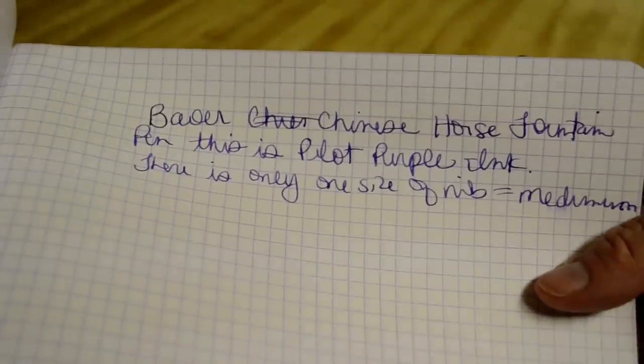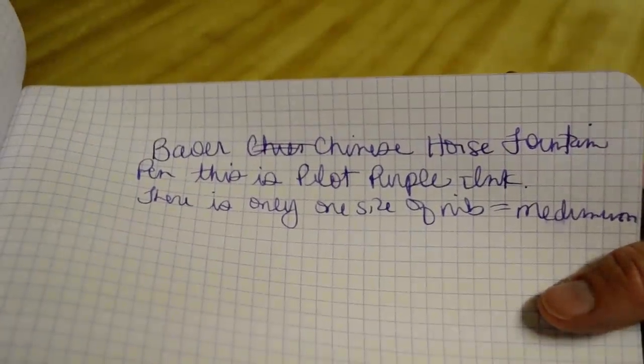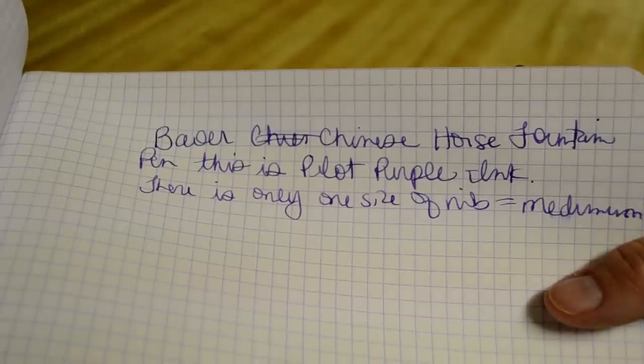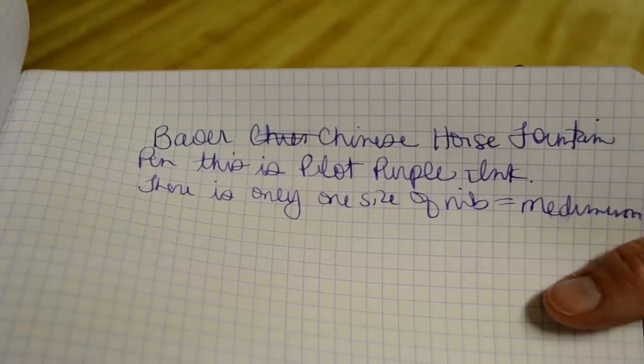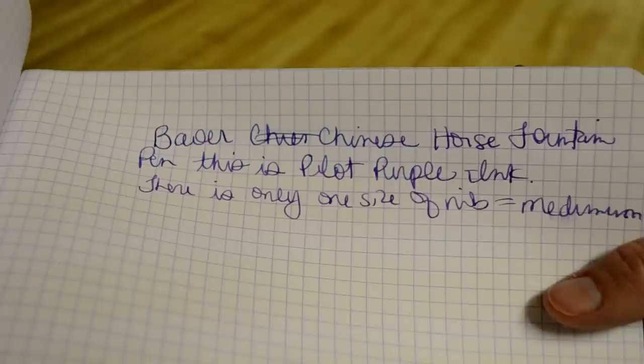Okay hopefully you can pick that up. So it is the Bauer Chinese horse fountain pen. It's a golden horse. This is Pilot Purple. I am not going to try to pronounce it. If I do it'll just be embarrassing. Iroshizuku. I don't know.